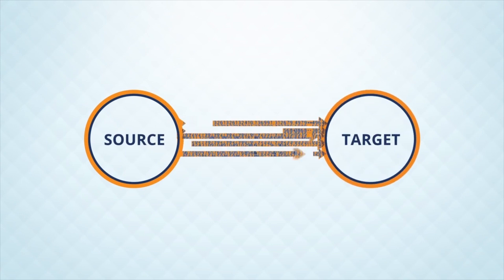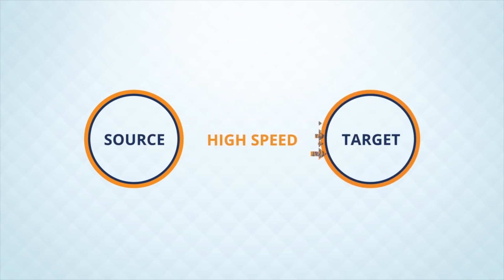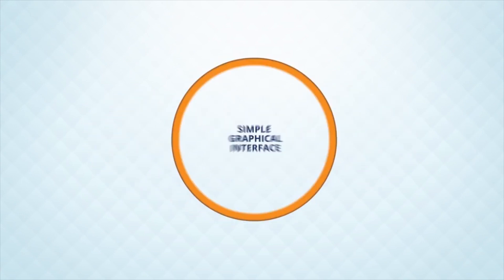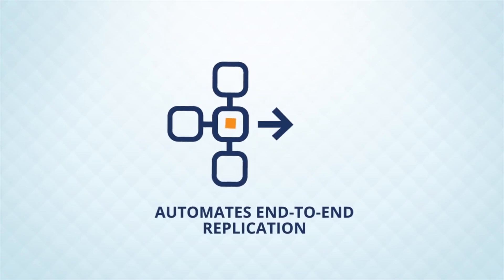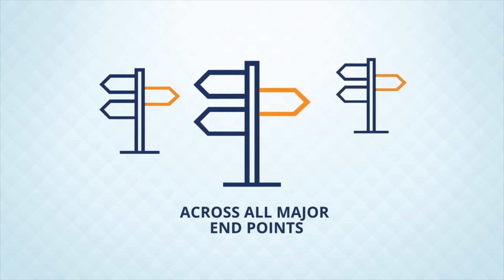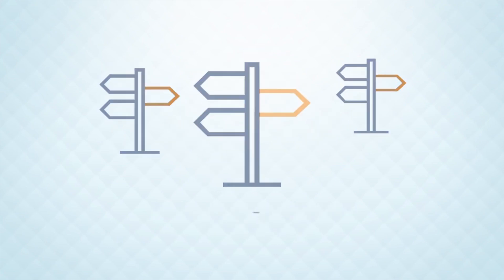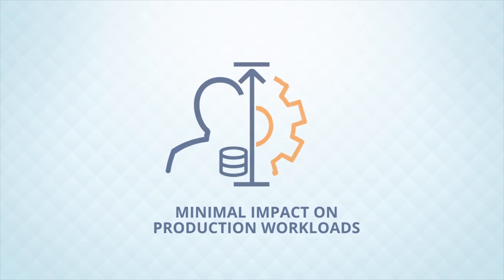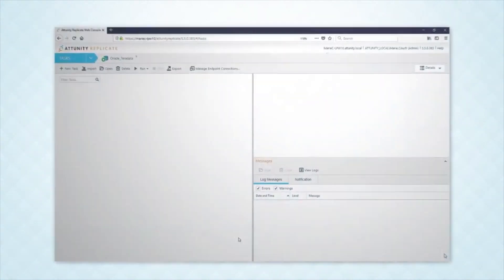Attunity Replicate moves data from source to target at high speed through a simple graphical interface that completely automates end-to-end replication across all major endpoints, with minimal impact on production workloads. Let's take a look.